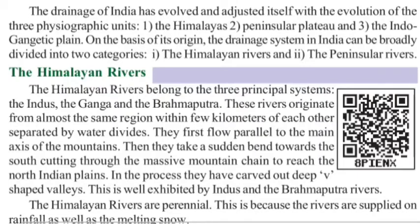You can remember these three Himalayan rivers easily with the code BIG — B stands for Brahmaputra, I stands for Indus, and G stands for Ganga.